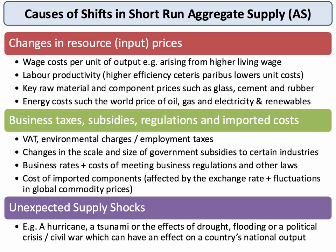It could be that a producer such as the construction sector faces a change in the cost of cement, glass, or steel, or car makers face a change in the cost of metals or rubber. Energy costs are very important for many businesses, particularly power generation. The world price of oil, gas, and renewable energy is a major supply cost, so world resource prices are key to understanding shifts in aggregate supply.